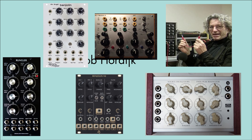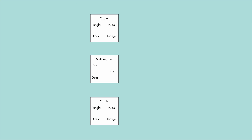This works with a wide range of modules, so feel free to substitute your own as needed. Basically, how a Rungler patch works is you have two oscillators, A and B, and a shift register.